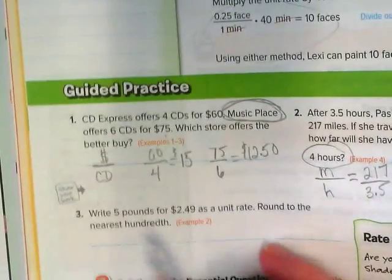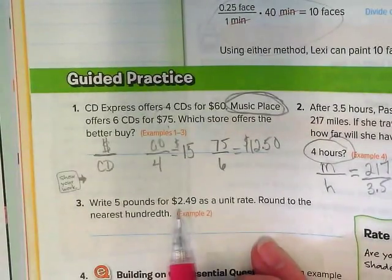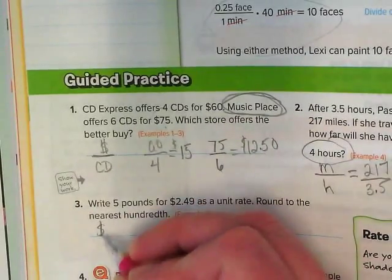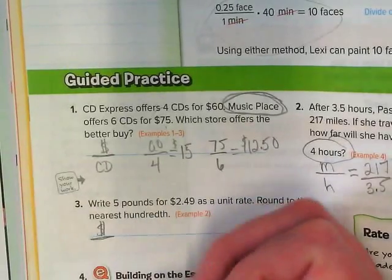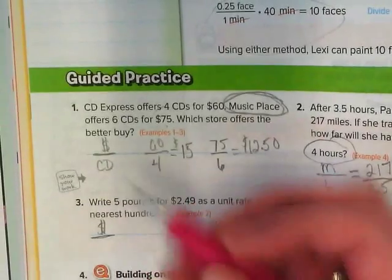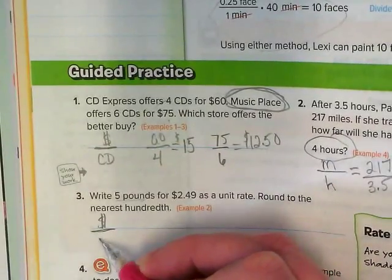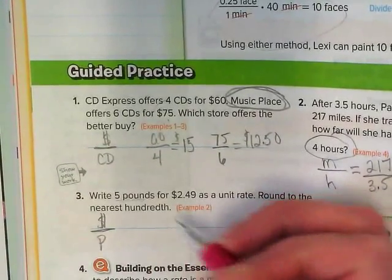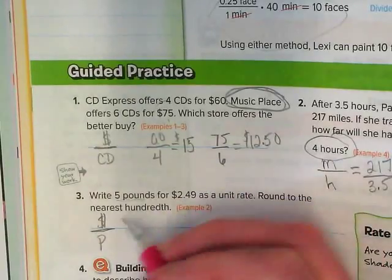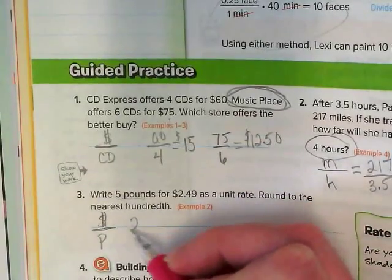Last problem. If I see money in the problem, I know when I set up my ratio, money's going to go on the top and whatever the other thing is, it's going to go in the base. In this case, it says five pounds. So pounds is going to go on the bottom. I have five pounds for $2.49.